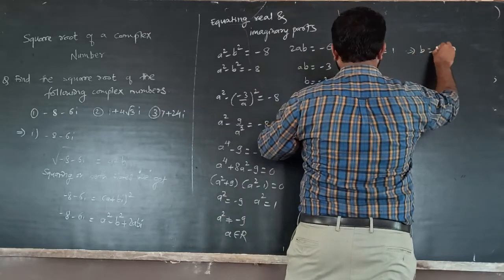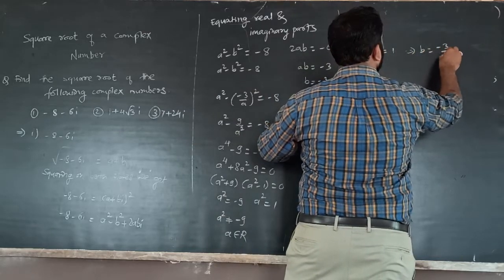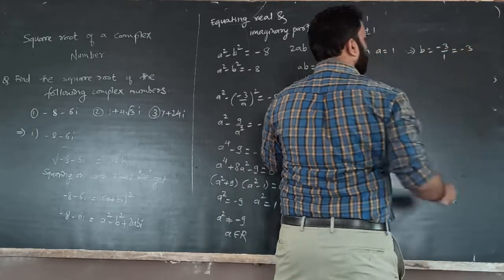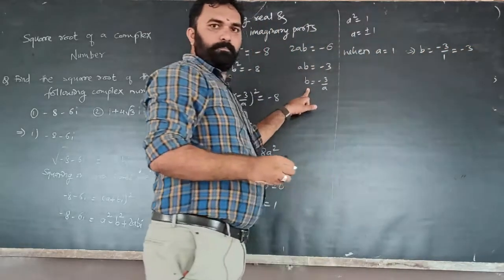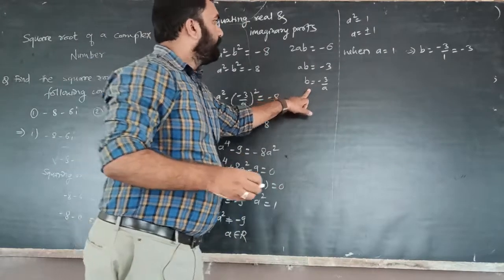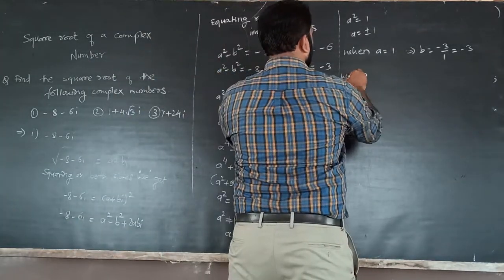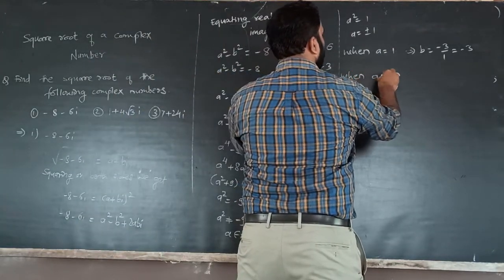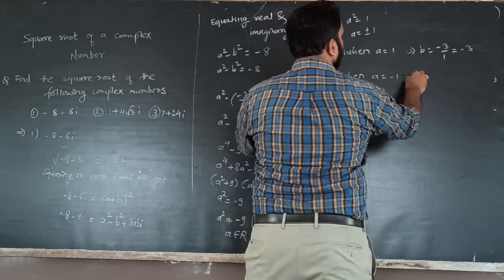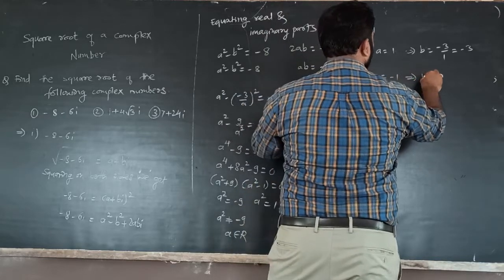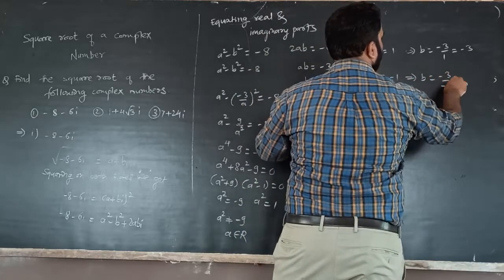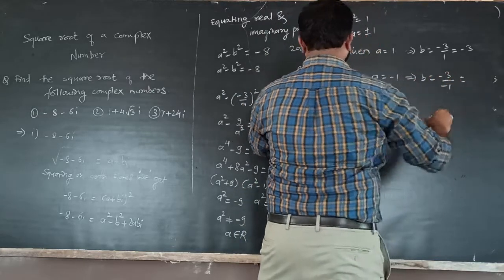When a equals plus 1, b equals minus 3 over 1, so b equals minus 3. When a equals minus 1, b equals minus 3 over minus 1, so b equals plus 3.